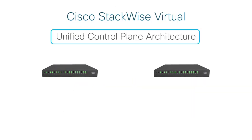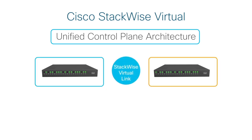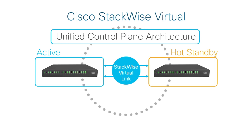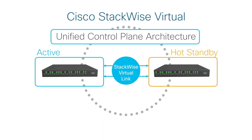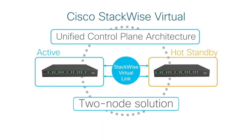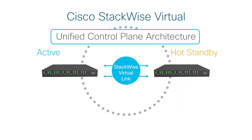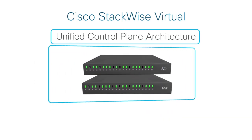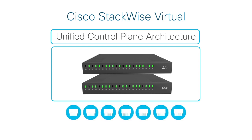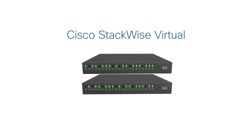StackWise Virtual forms a unified control plane architecture by assigning one device as active and another device as standby. Both devices play an active role when it comes to forwarding traffic. The primary design feature of StackWise Virtual is that it is a two-node solution, which means two Catalyst 9K switches are connected over a StackWise Virtual link, or SVL. StackWise Virtual brings two switches together, forming a single logical switch, so you have a large number of ports from two switches available, managed as a single entity.